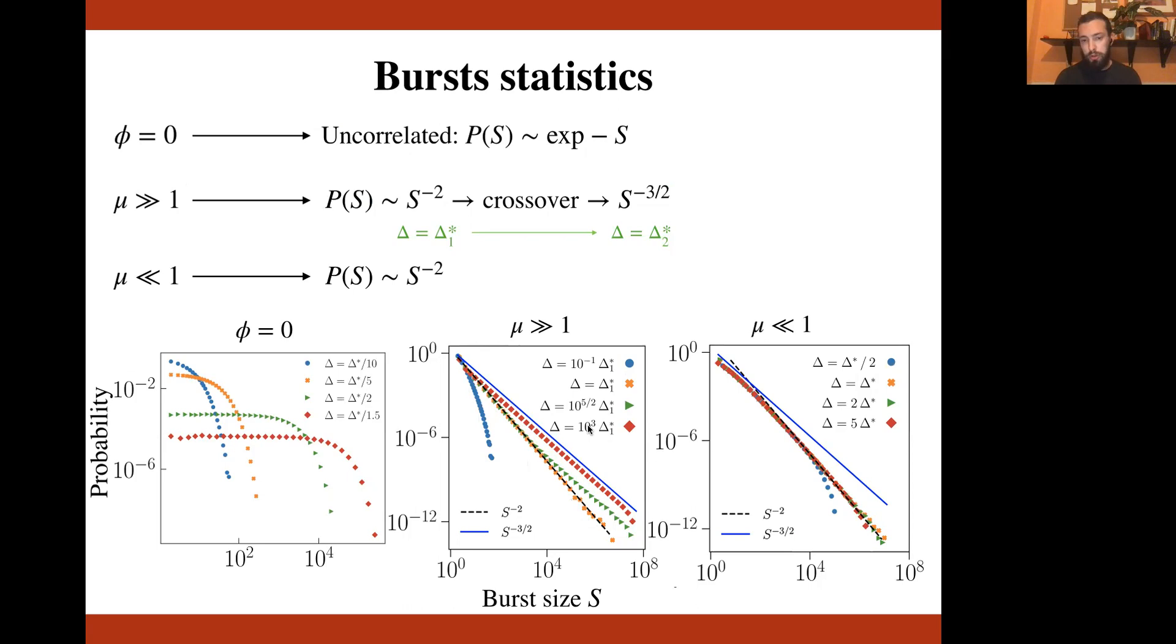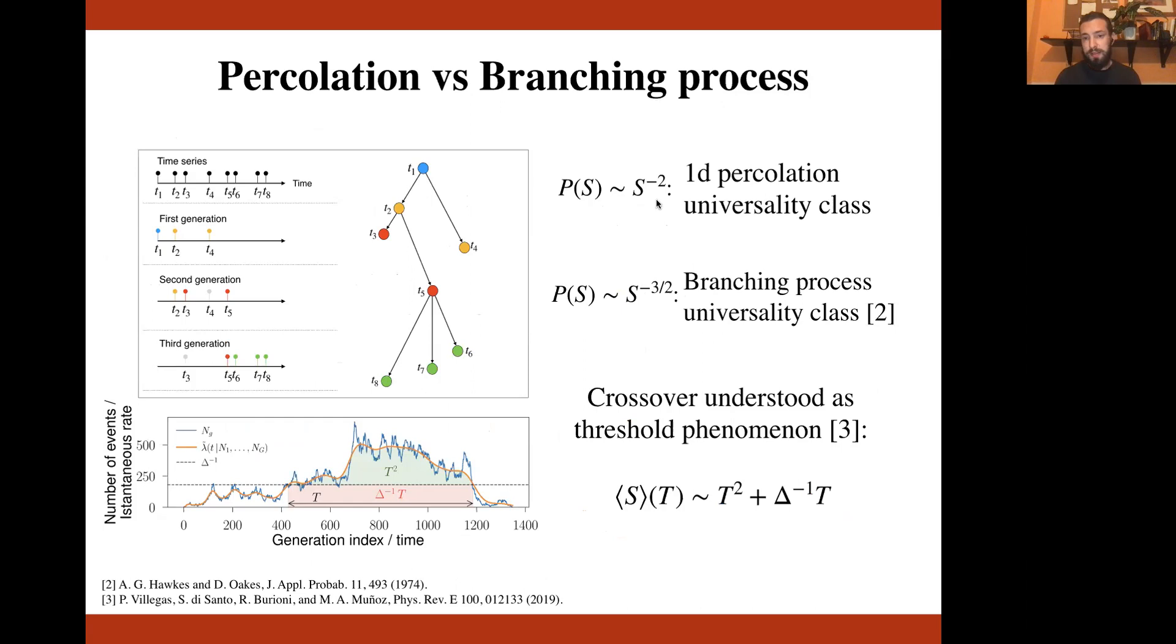And as delta, the temporal resolution, grows, we have a crossover regime until very close to the second transition point, we have another pure power law scaling with exponent minus three and a half. Let me note that the exponent two is the exponent expected for a one dimensional percolation problem, while the exponent three and a half is the exponent of the mean field branching process. Finally, if mu is much smaller than one in the regime where there is only one single transition, we only find one power law scaling again with the exponent minus two.